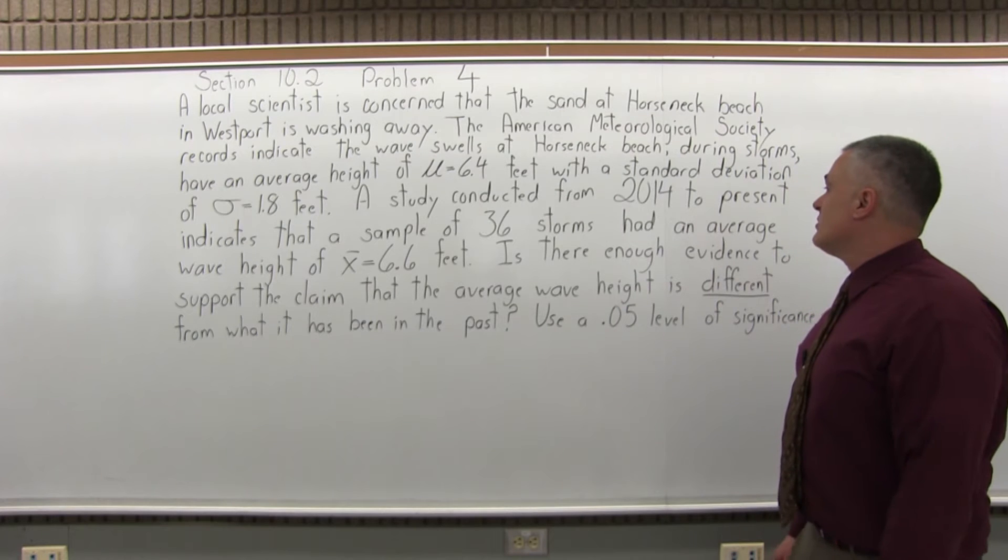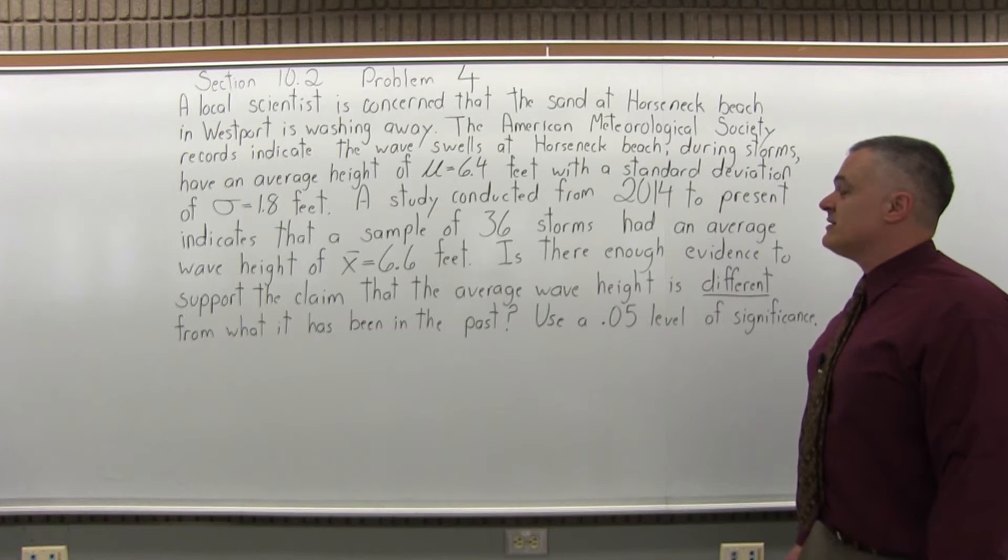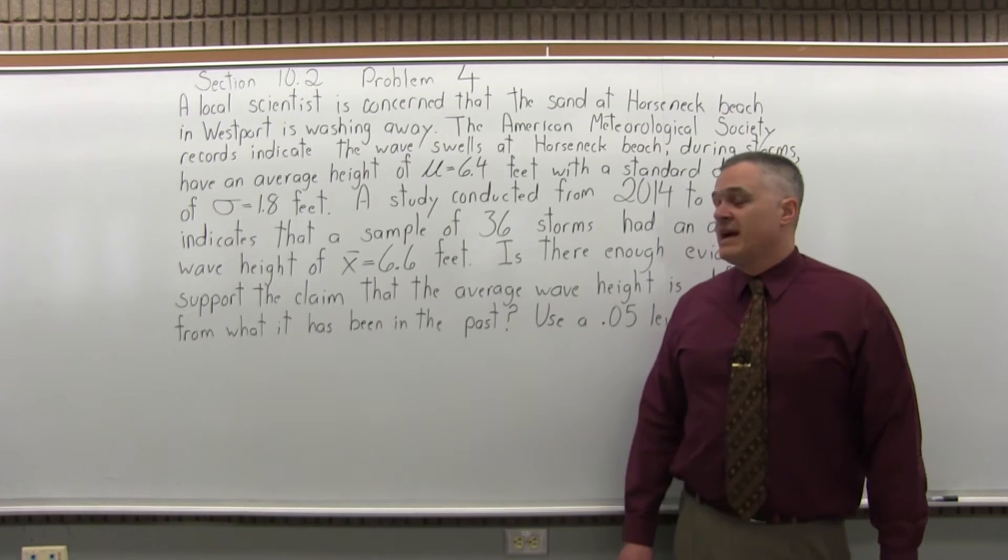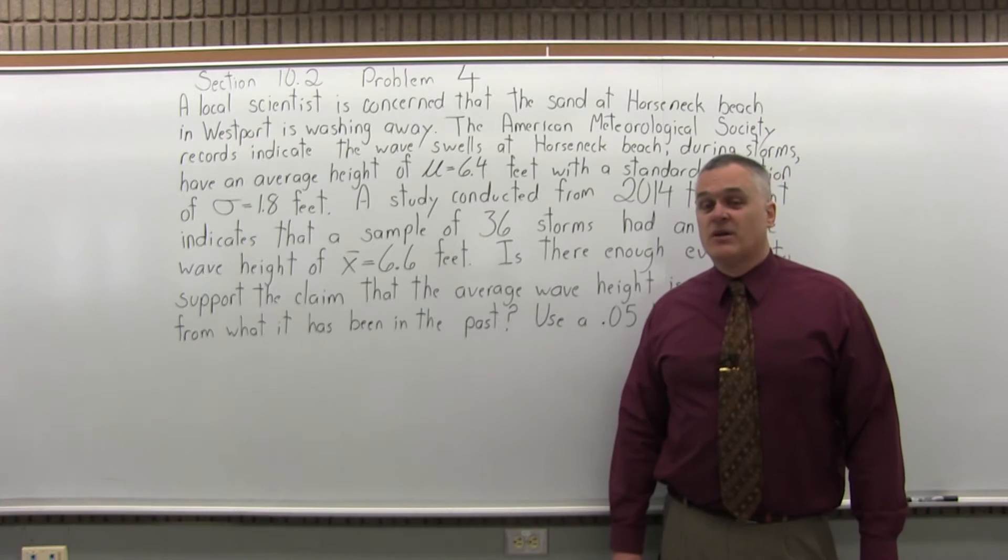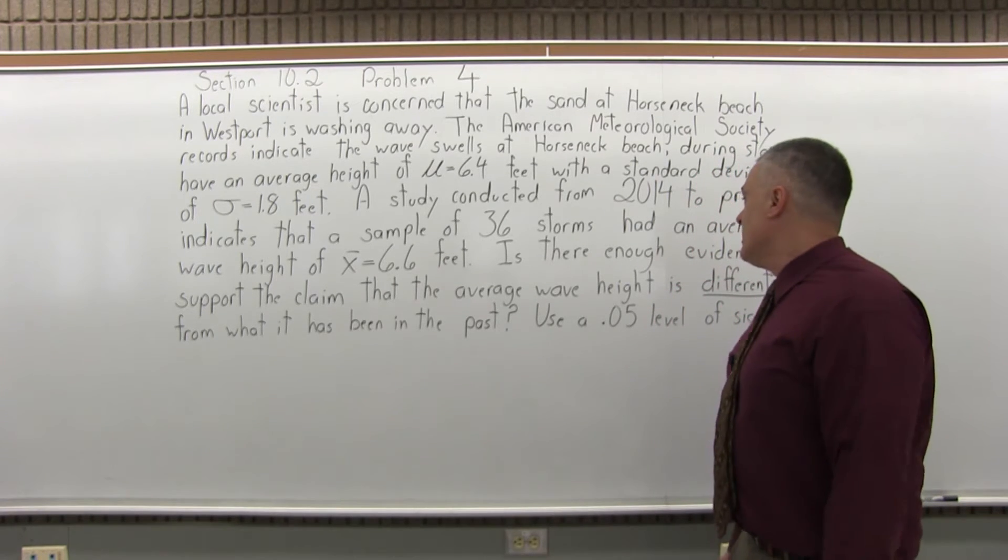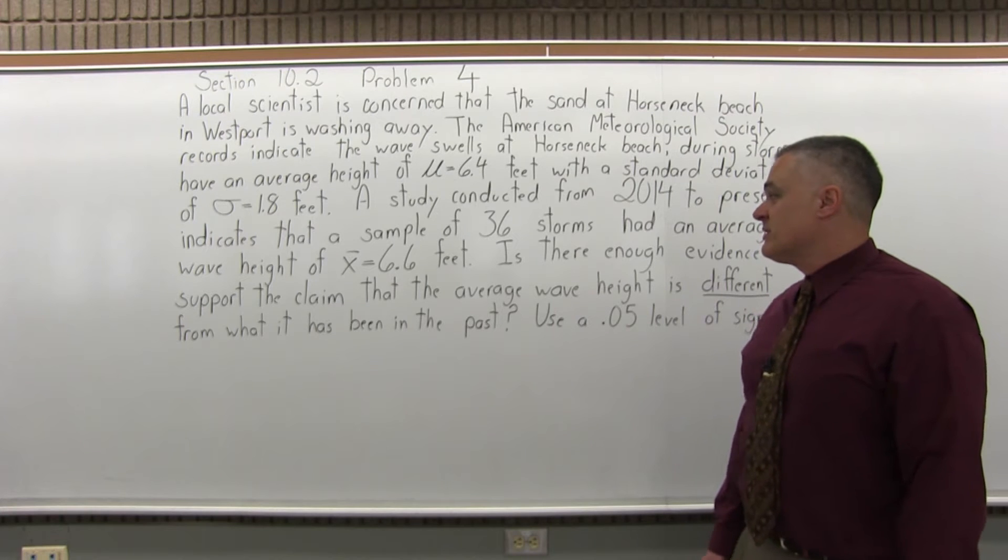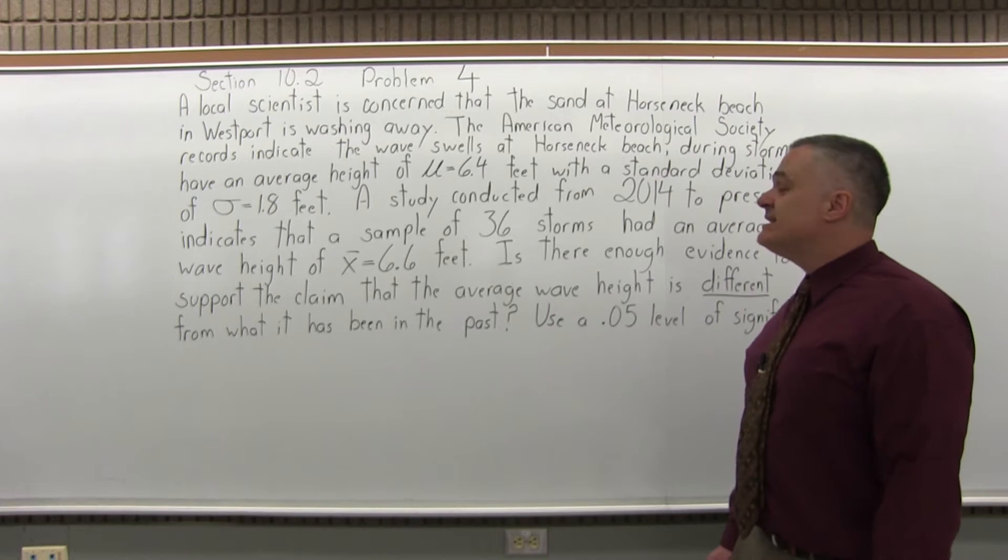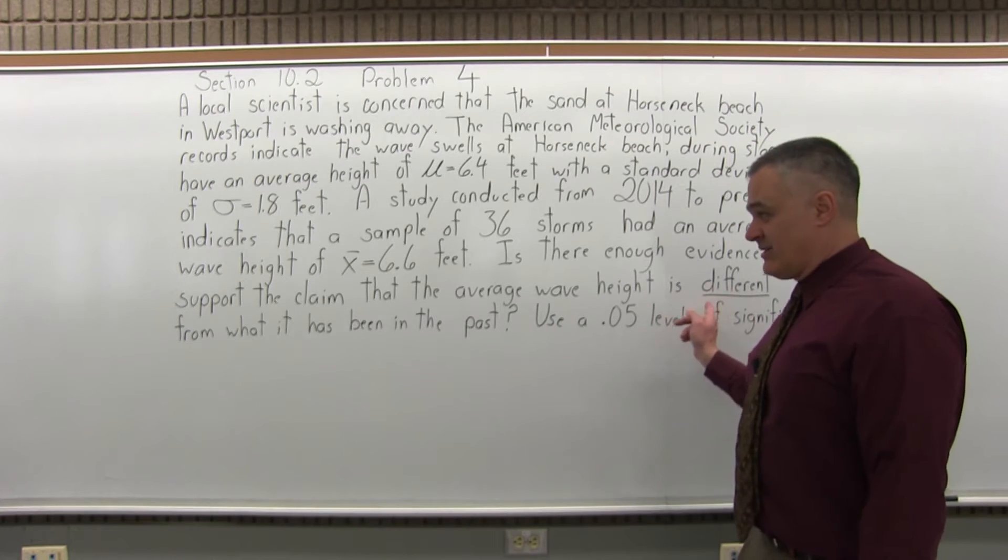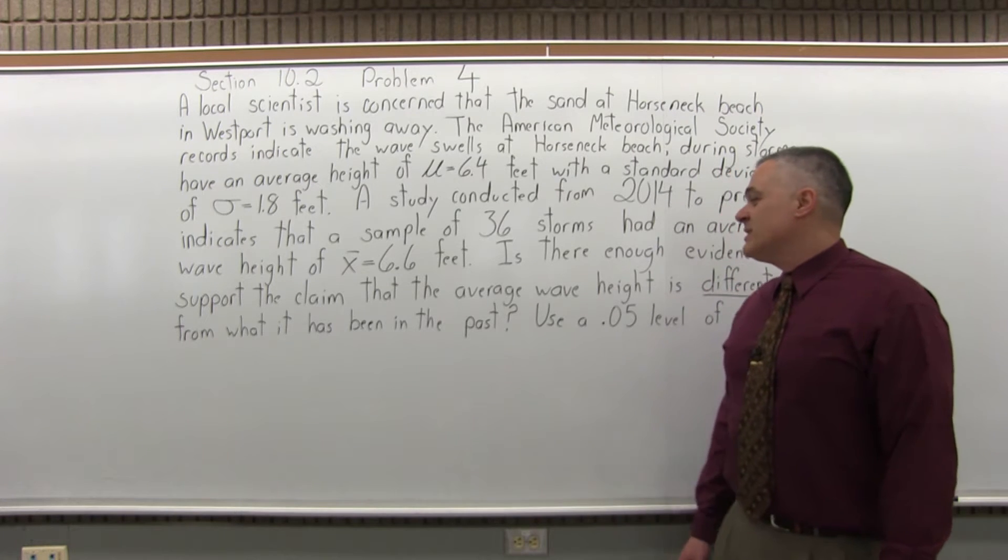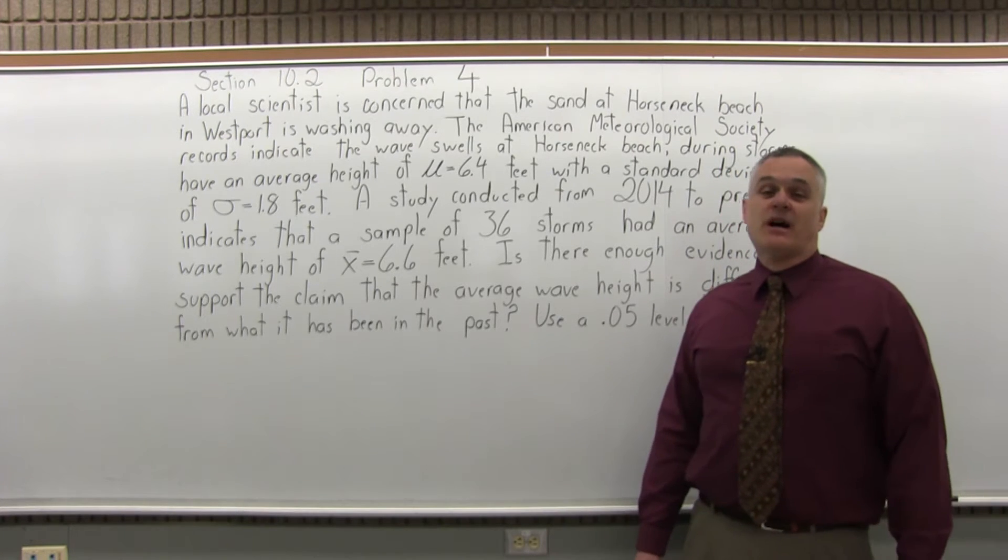A study conducted from 2014 to present indicates that a sample of 36 storms had an average wave height of x-bar equal to 6.6 feet. Is there enough evidence to support the claim that the average wave height is different from what it has been in the past? Use a 0.05 level of significance.